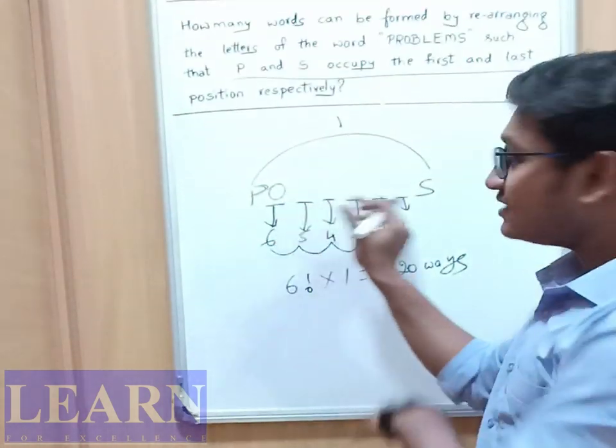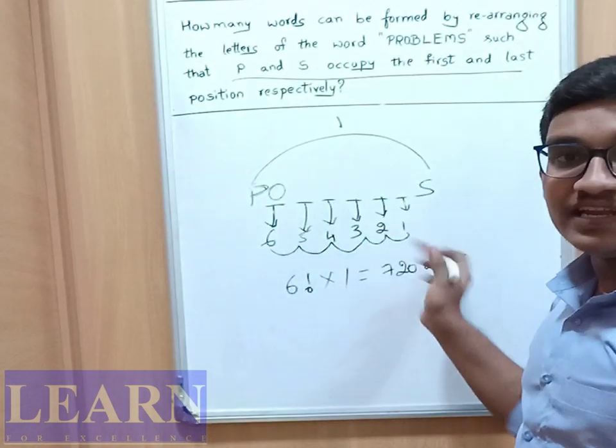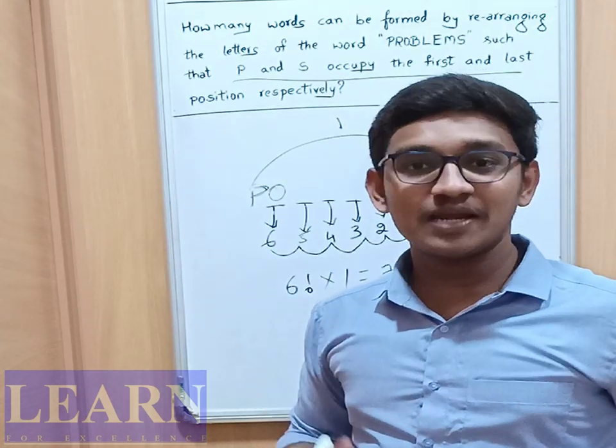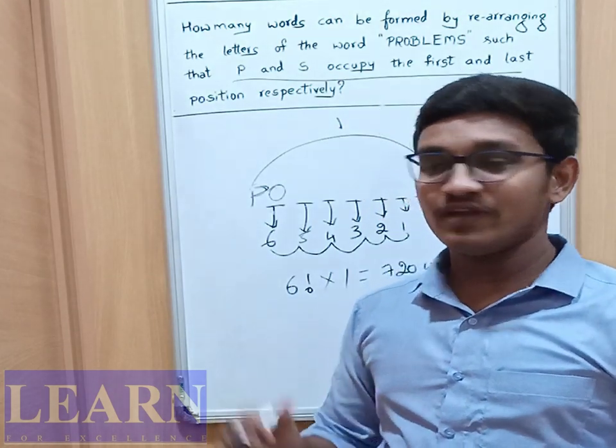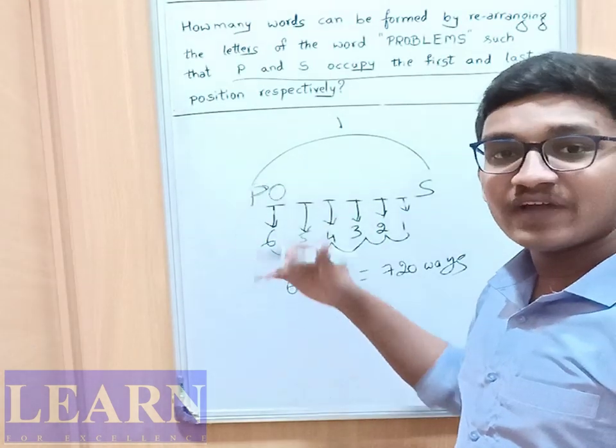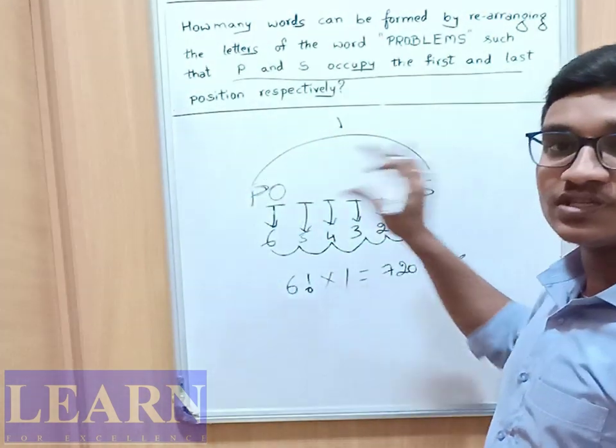Or, in between P and S there are six positions. Directly in linear arrangement, n items can be arranged in, or n letters can be arranged in, n factorial ways. In between P and S, total six letters are there. Six letters can be arranged in 6 factorial ways, and we know that P and S positions are fixed.